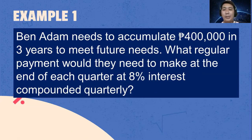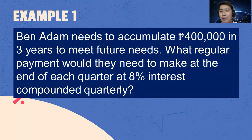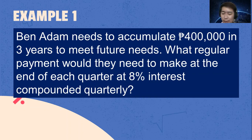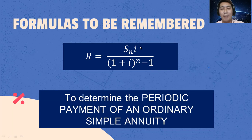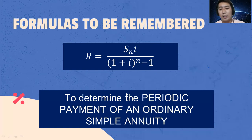Let's move on to the next example. Ben Adam needs to accumulate 400,000 pesos in 3 years to meet future needs. What regular payment would they need to make at the end of each quarter at 8% interest compounded quarterly? We use the formula R equals S sub n multiplied by I divided by the quantity of 1 plus I raised to N minus 1 to solve for the periodic payment.